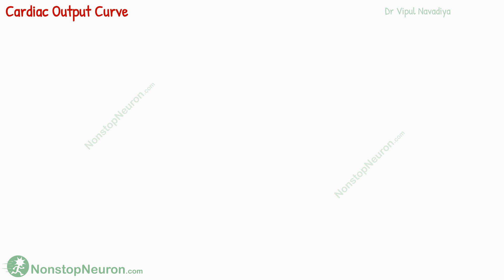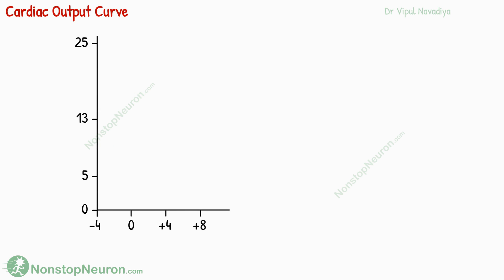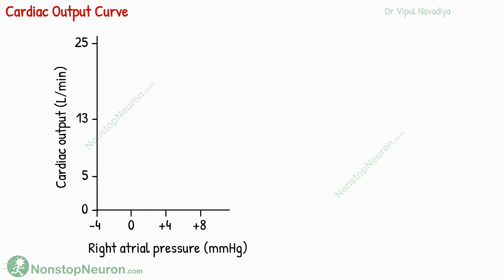First, the cardiac output curve. It shows the relationship between right atrial pressure and cardiac output. This curve is for normal situations without any nervous influence. Normal cardiac output is about 5 liters per minute at a right atrial pressure of about 0 mmHg. By the heart's intrinsic mechanisms, cardiac output can be increased up to 13 liters per minute.